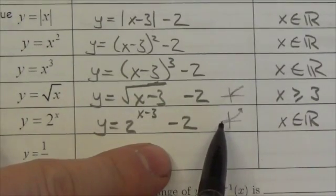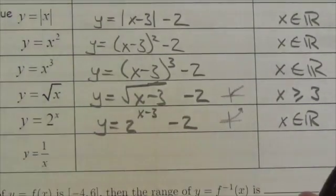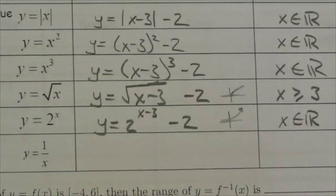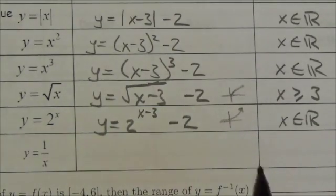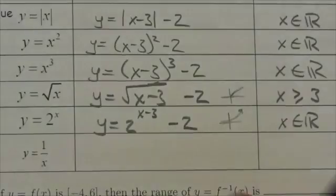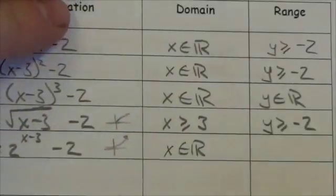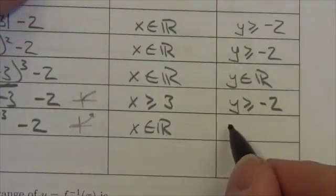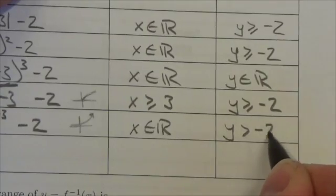However, the range here originally was greater than 0, not or equal to, just greater than 0. A horizontal translation won't affect that, but a vertical one will. So instead of being greater than 0, now this will become greater than negative 2.